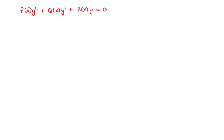Now, since the coefficients here — that is either P(x), Q(x), or R(x) — are non-constant coefficients, it means that we can't use the characteristic equation anymore. So we need to fall on a different approach, which we call the method of reduction of order.